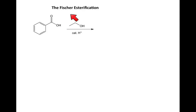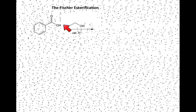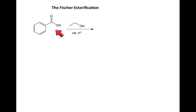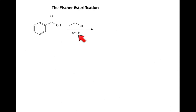In this video we're going to be talking about the Fischer Esterification. The Fischer Esterification is a reaction where you react a carboxylic acid — in this case I'm using benzoic acid for my example — with any alcohol. Usually this reaction is most effective with simple alcohols. This reaction is catalyzed by H+, by acid, and you just need a catalytic amount of acid.